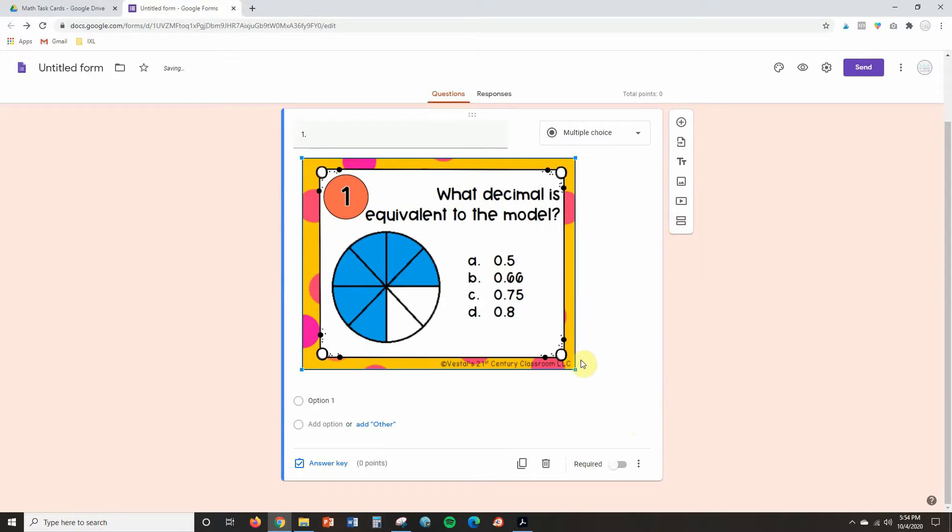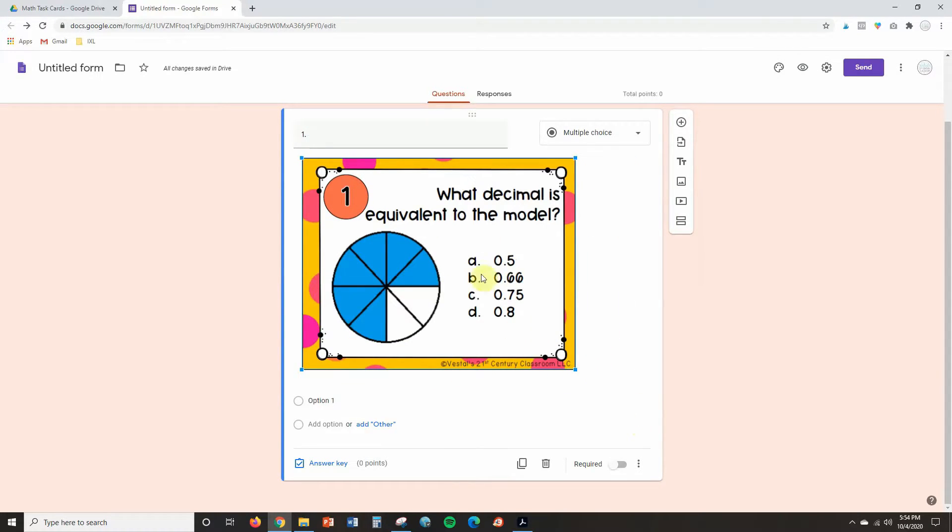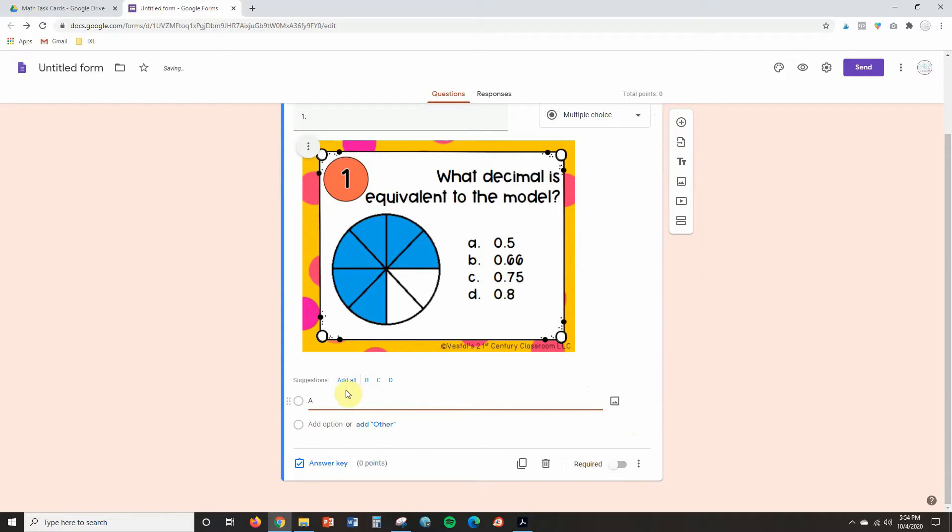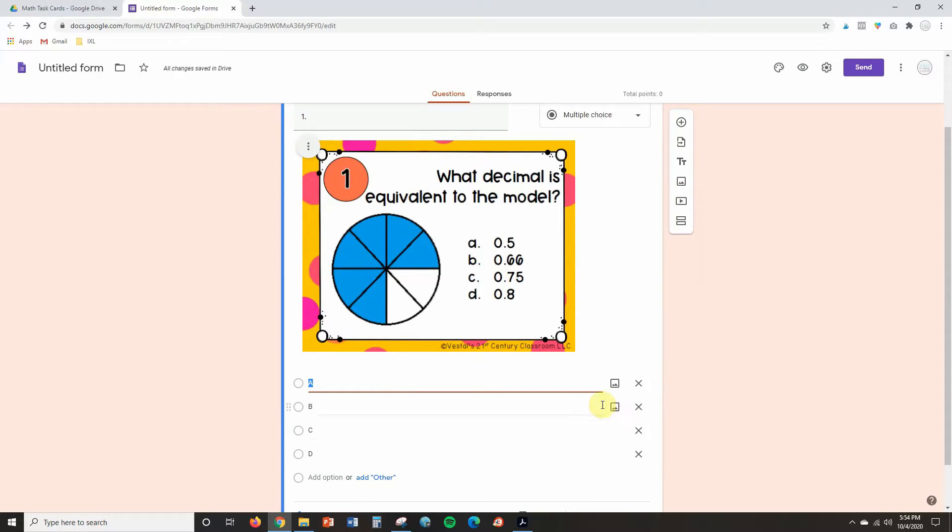Okay, so here's the first task card and know that if you need to make it bigger or smaller you can do that. And then what I do since this is a multiple choice one is I'm just going to type in A and actually if it sees you typing in ABCD it will suggest that you add them all.